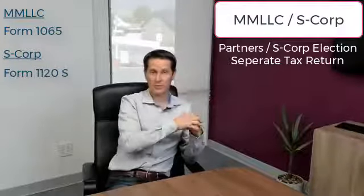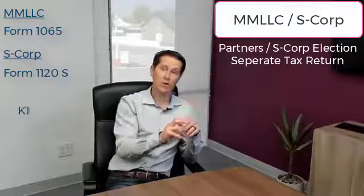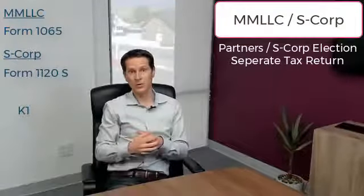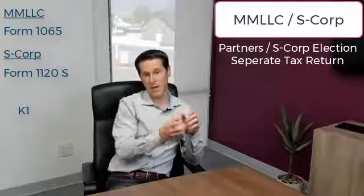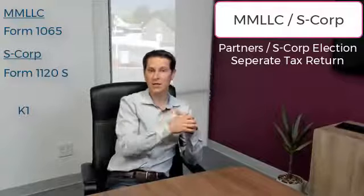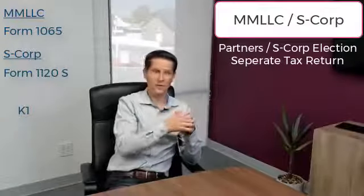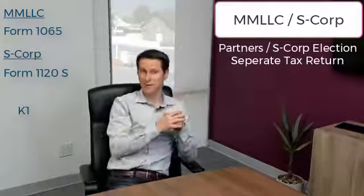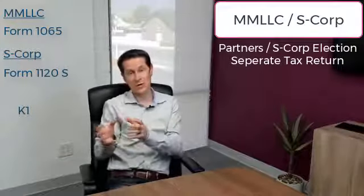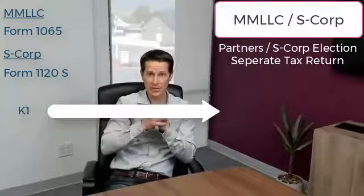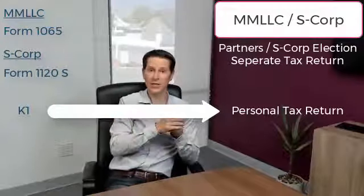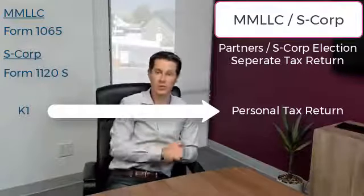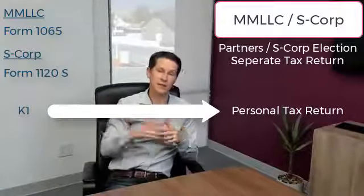You prepare the business tax return, and at the end of that you get a K-1 that comes out of it. The K-1 is the pass-through form that discloses how much income you — as the 50% owner or whatever percentage — are going to be taxed on. The business itself does not pay taxes, but the K-1 shows the income you earned from that business and gets reported on your personal tax return, where you then pay the taxes. That's where the pass-through element happens — the business passes the income through on the K-1 to your personal 1040, where it's added to your taxable income.